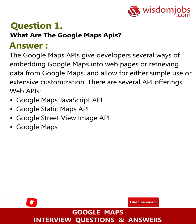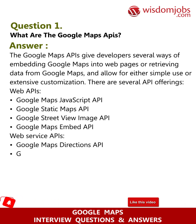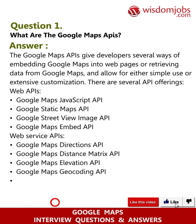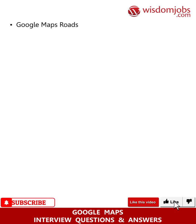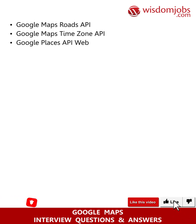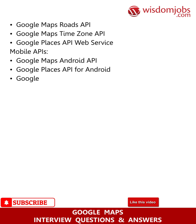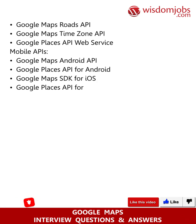Web service APIs include: Google Maps Directions API, Google Maps Distance Matrix API, Google Maps Elevation API, Google Maps Geocoding API, Google Maps Geolocation API, Google Maps Roads API, Google Maps Time Zone API, and Google Places API Web Service. Mobile APIs include: Google Maps Android API, Google Places API for Android, Google Maps SDK for iOS, and Google Places API for iOS.